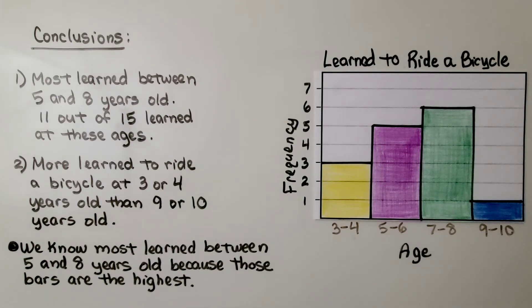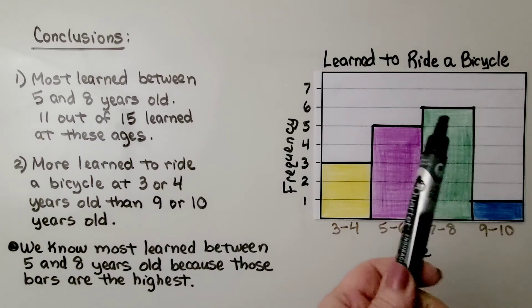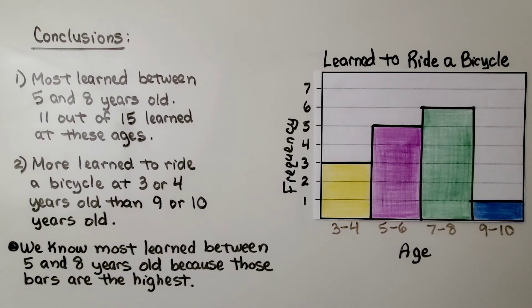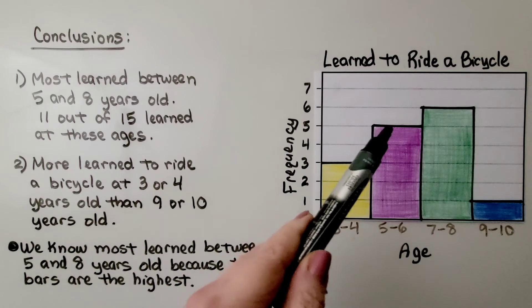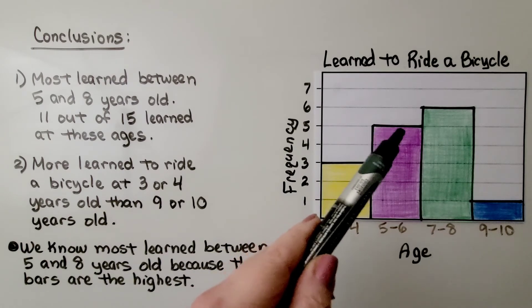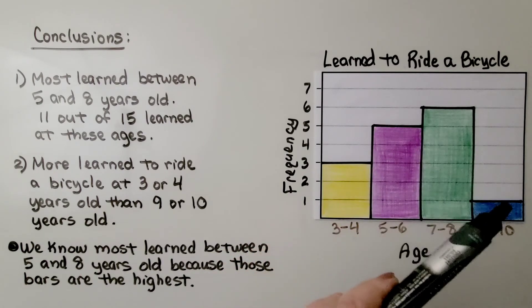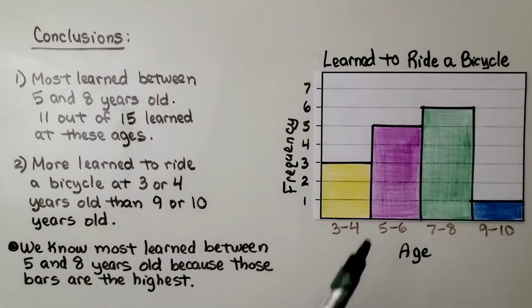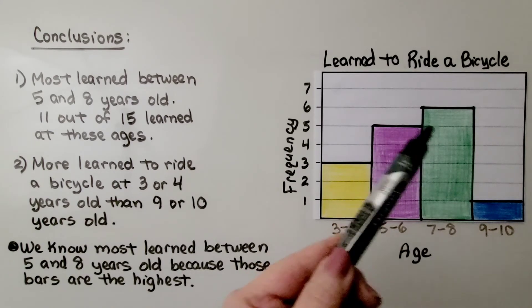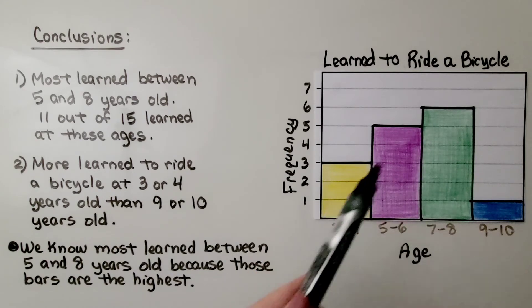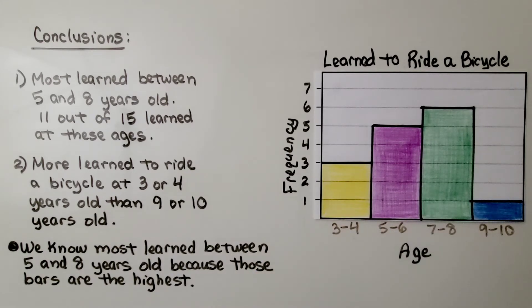So we can see from the shape that most learned between 5 and 8 years old. 11 out of 15 learned at these ages. We have 3 and 5, that's 8 people, 8 kids. And 6, that's 14 and 1 more is 15. And if we add the 5 and 6 together, that's 11. So that's 11 for these 2 bars out of 15 in all. So most learned between 5 and 8 years old.